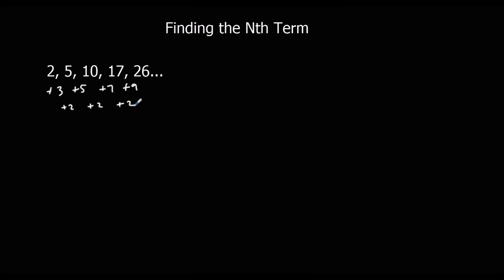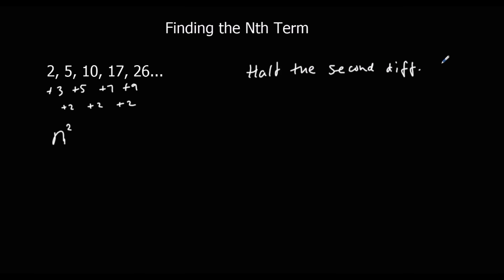Because the second difference is two, that means it's n squared — just one n squared. What we do is we half the second difference. So if the second difference was four it would be two n squared, if it was six it would be three n squared. In this case, half of two is one, so we've got one n squared, or just n squared.